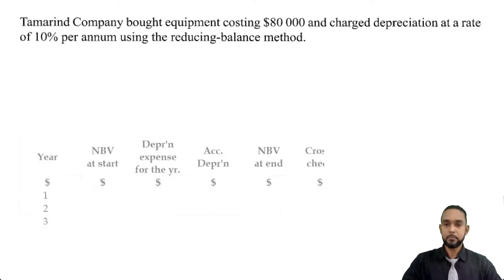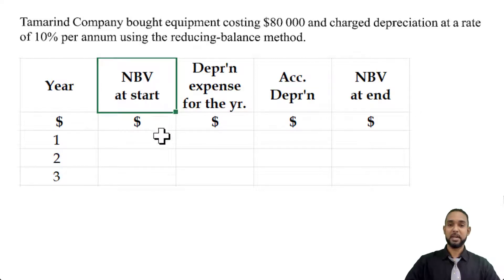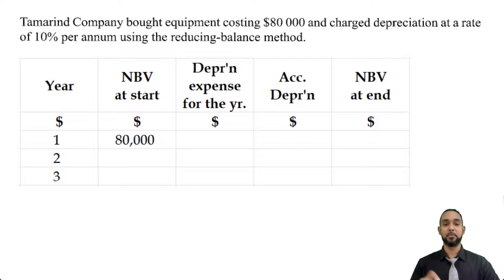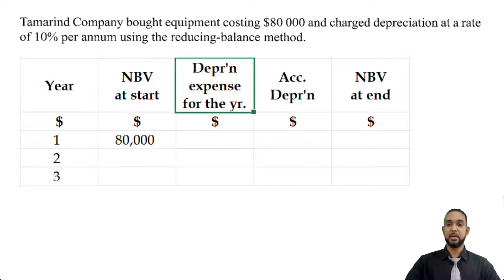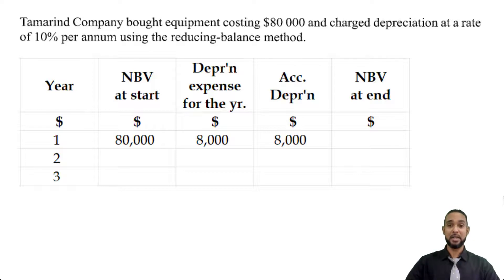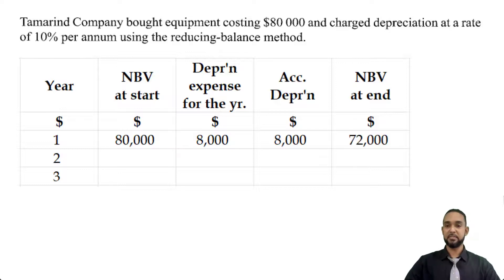The table has columns for: year; cost or net book value before depreciation (i.e., net book value at the start of the year); depreciation expense for the year, which is 10% of the value at start; accumulated depreciation, which is the sum of all depreciation expenses going down year by year; and net book value after depreciation. For year one, the net book value at start equals the cost of the asset — $80,000 — since no depreciation has been charged yet. The depreciation expense is 10% of $80,000, which is $8,000. Accumulated depreciation is also $8,000, and net book value at end is $80,000 minus $8,000, giving us $72,000.